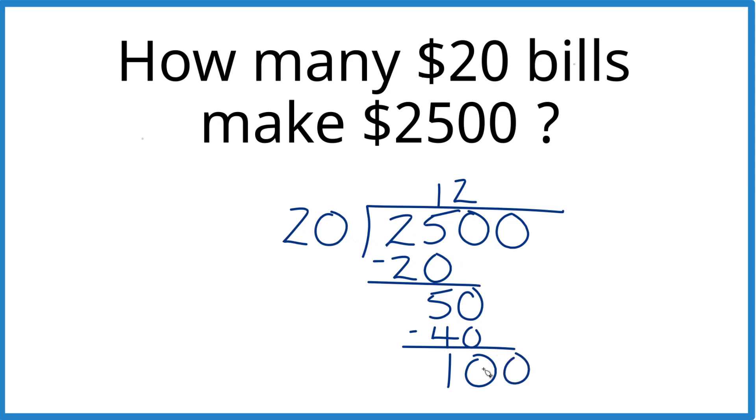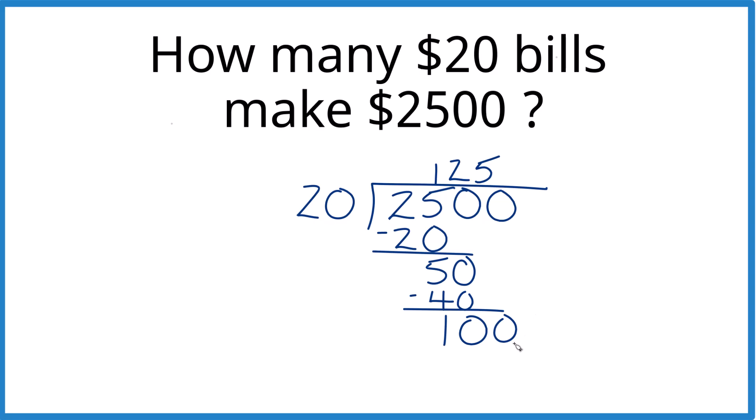And 20 goes into 100. 5 times 20, that's 100. Subtract, and we get 0, no remainder.